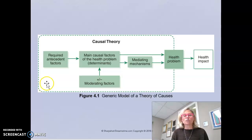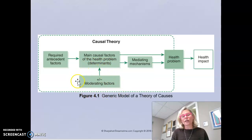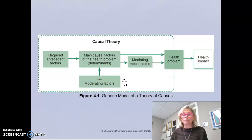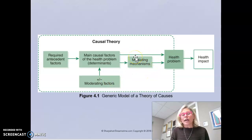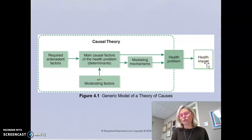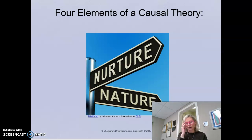Looking at Figure 4.1, there are four elements to the causal theory: antecedent factors, main causal factors (also known as determinants), moderating factors (which have a plus and minus because they can either positively or negatively influence the health problem), and mediating factors. All of these impact what the health problem is and what impact an intervention can have on it.